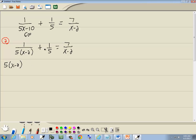So that's our LCM, and that's what we'll multiply everything by. We'll multiply it times our first fraction, the 1 over 5 times x minus 2. We'll multiply it times the second fraction, the 1 fifth. And we'll multiply it times the fraction on the right side, the 7 over x minus 2.